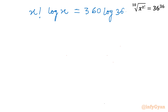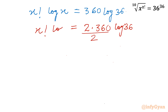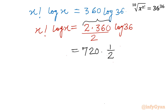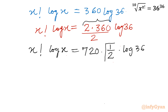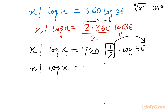Now I will use a manipulation step: multiply the right-hand side numerator and denominator by 2. So the numerator becomes 2 × 360 = 720, and the denominator gives a factor of 1/2 applied to log 36. Using the log power rule, 1/2 · log 36 = log(36^(1/2)), and the equation becomes: x! · log x = 720 · log(36^(1/2)).